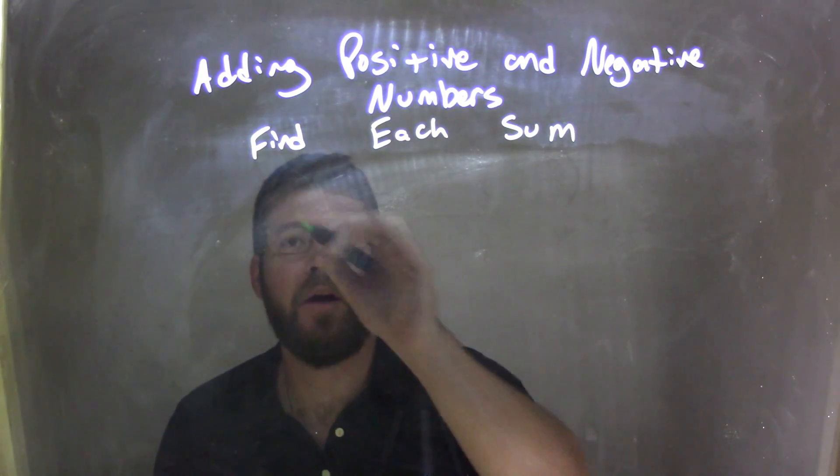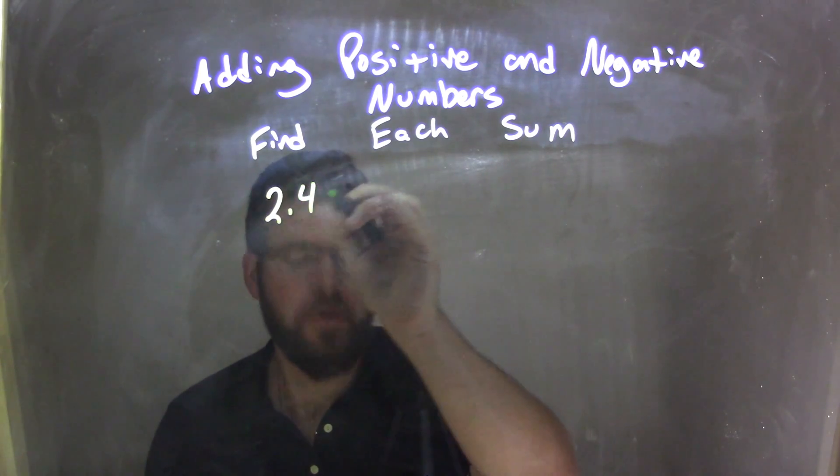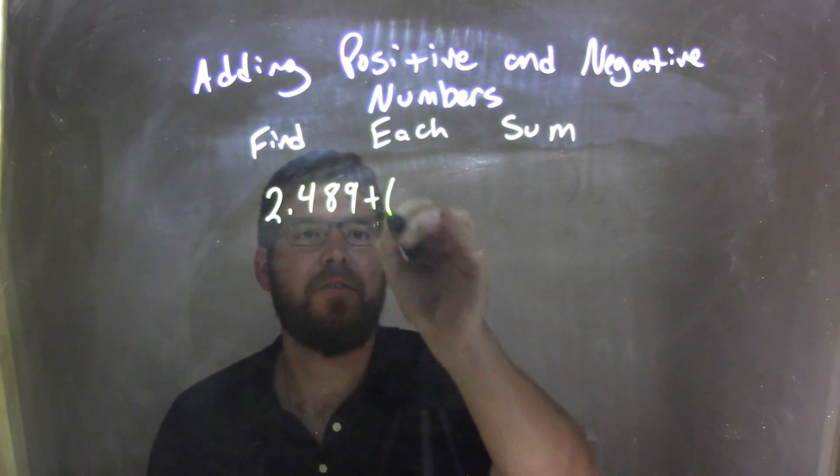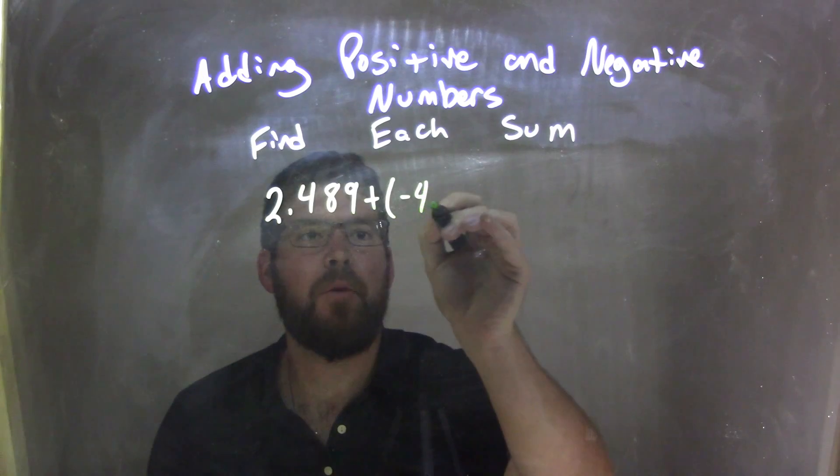So if I was given this expression, 2.489 plus negative 4.3...